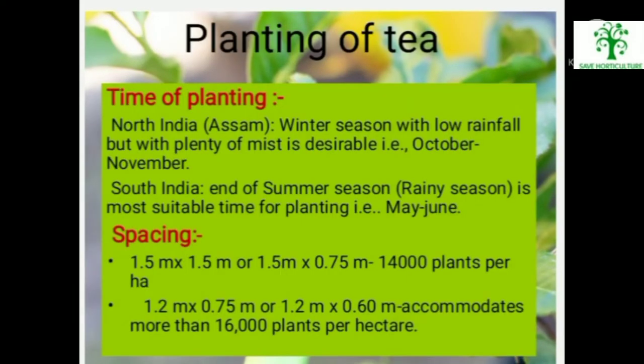Planting of Tea. Time of planting: in North India, winter season with low rainfall but plenty of mist is desirable — October to November. In South India, end of summer season going into rainy season is the most suitable time for planting — May to June. Spacing is 1.5m × 1.5m or 1.5m × 0.75m, accommodating 14,000 plants per hectare; or 1.2m × 0.75m or 1.2m × 0.60m, accommodating more than 16,000 plants per hectare.